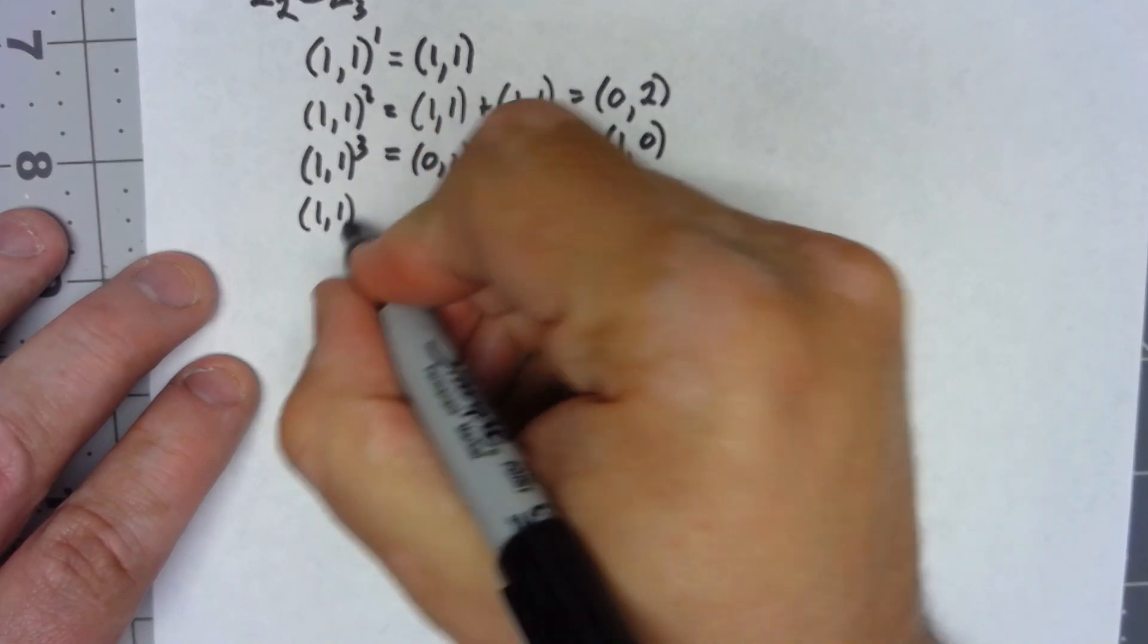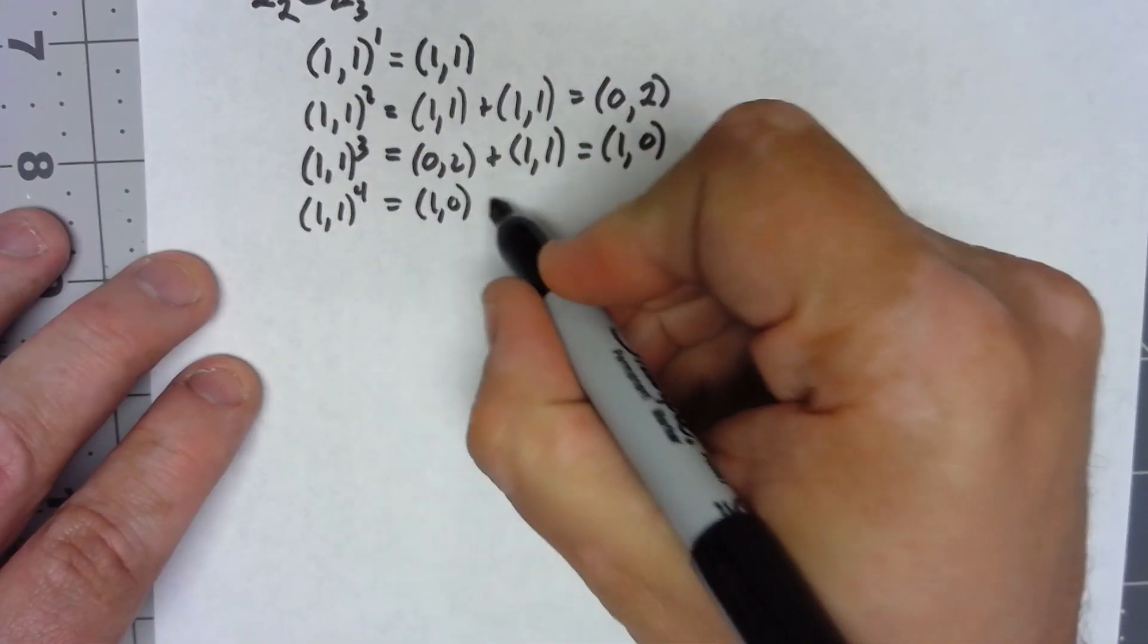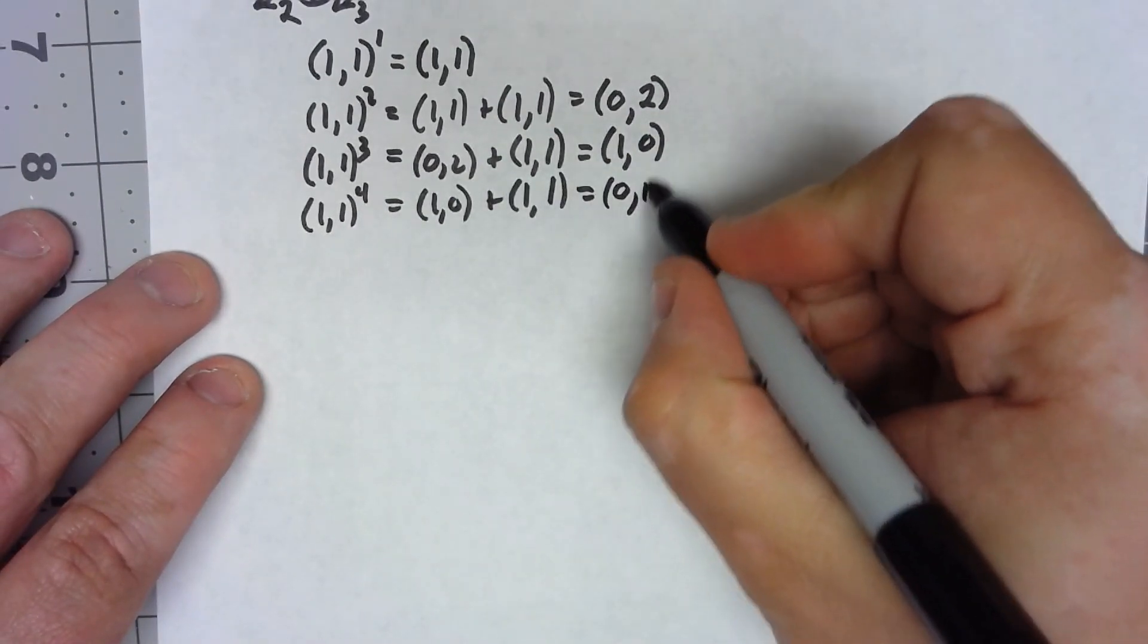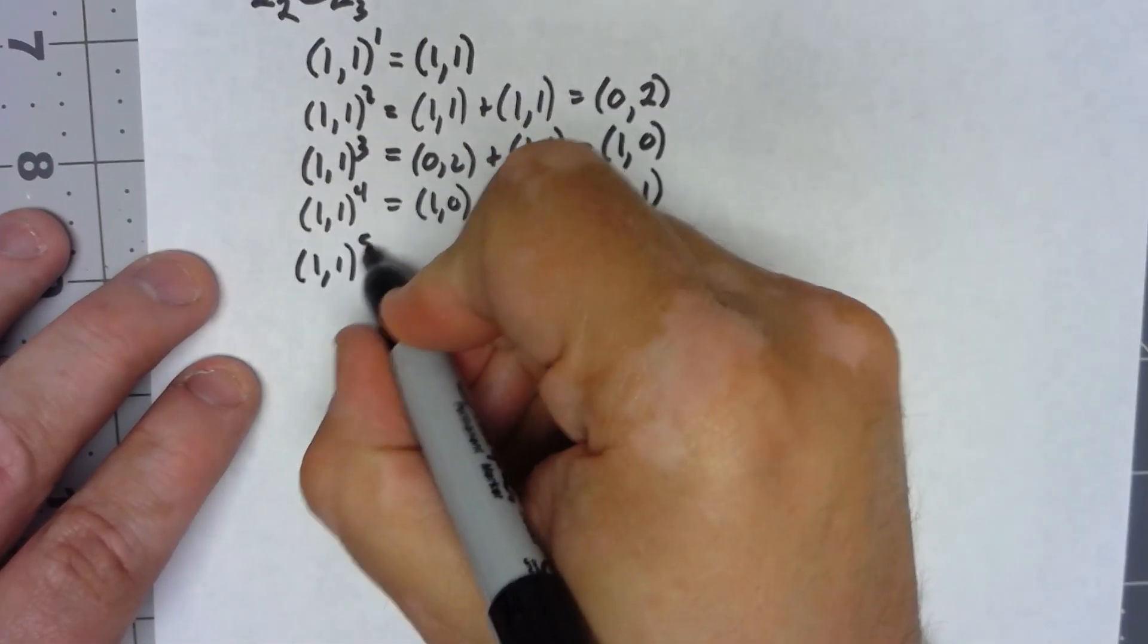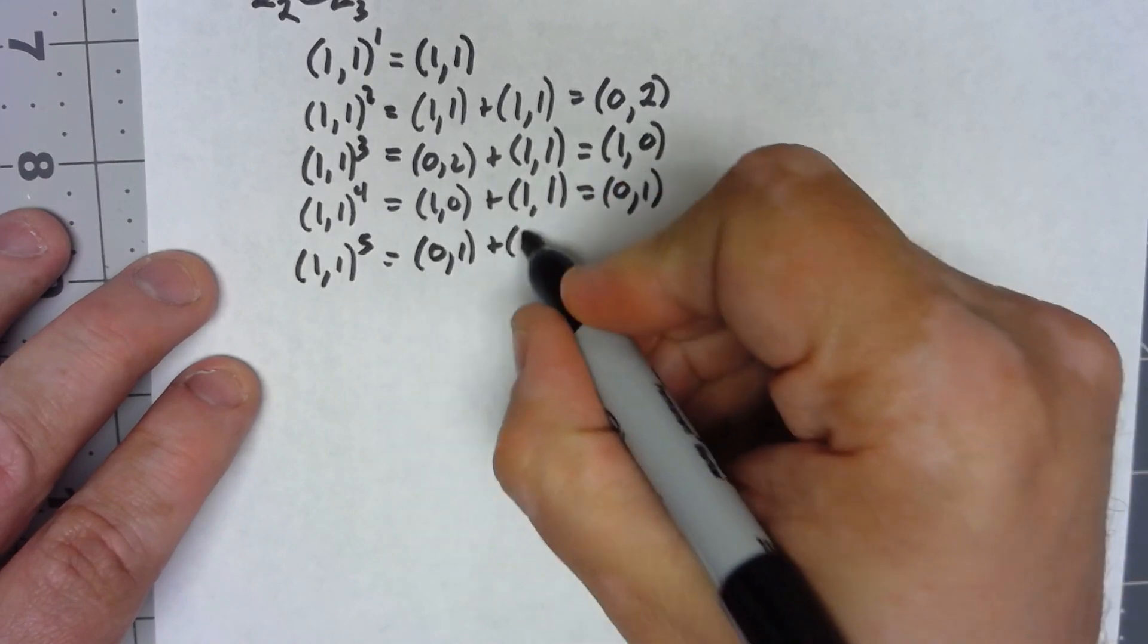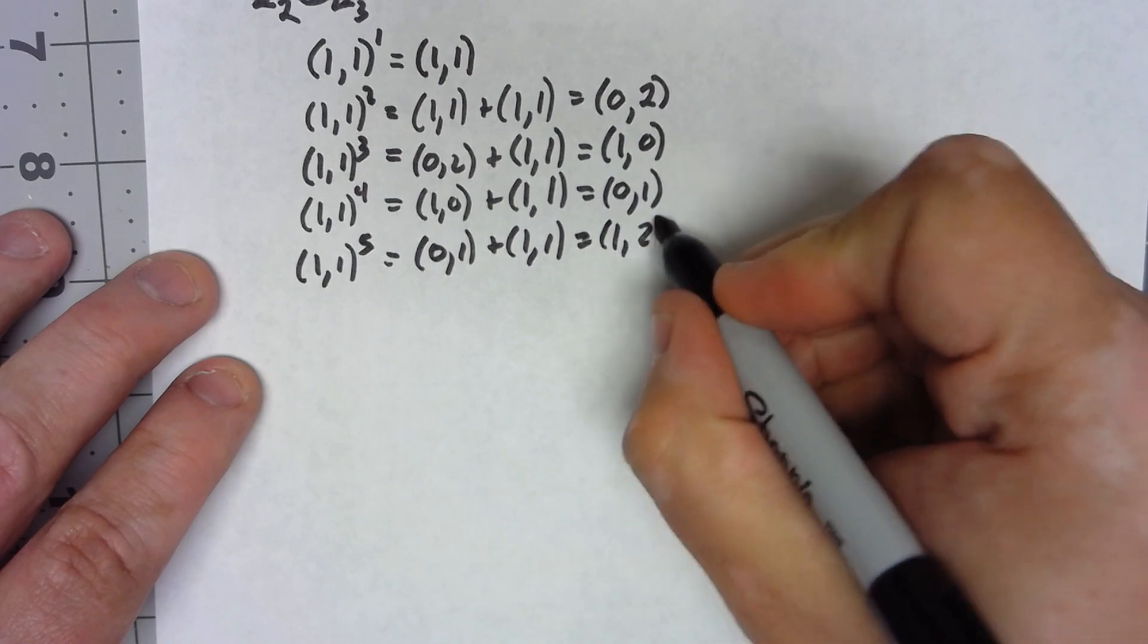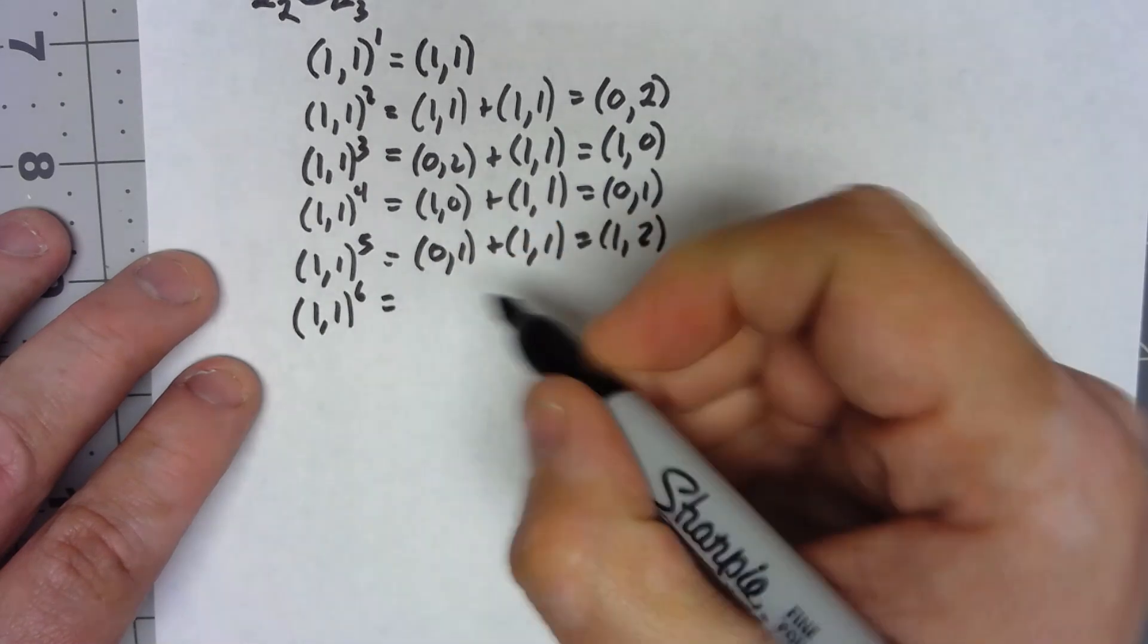(1,1) to the fourth would be (1,0) plus (1,1) would give us (0,1). (1,1) to the fifth would be that (0,1) plus (1,1). That's going to give me (1,2).